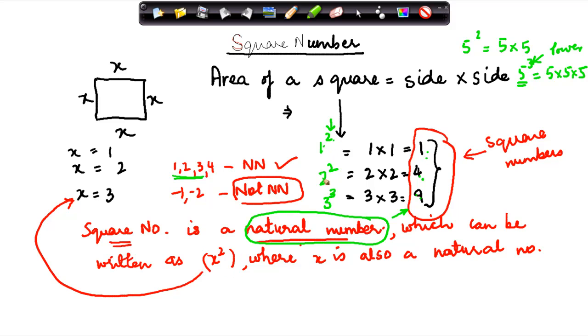So these numbers can also be written as 1 square, 2 square, 3 square, where x's value is what? 1, 2, and 3 is also a natural number.